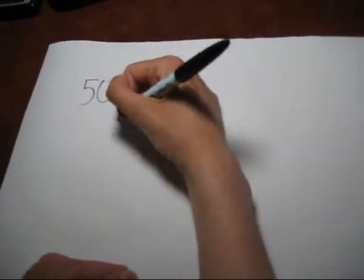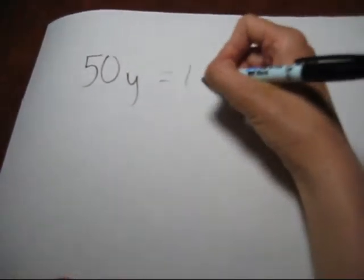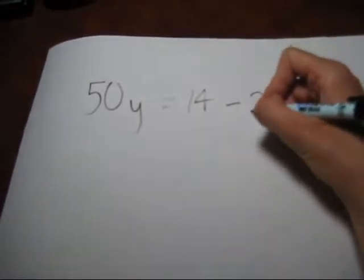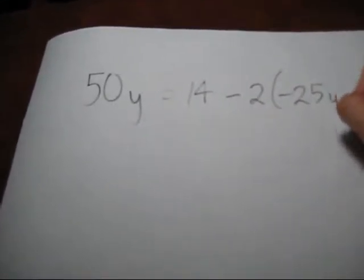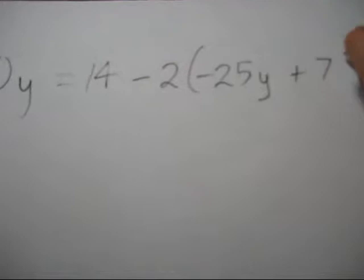We're going to do some trick problems. We've got 50y equals 14 minus 2 times the quantity negative 25y plus 7.